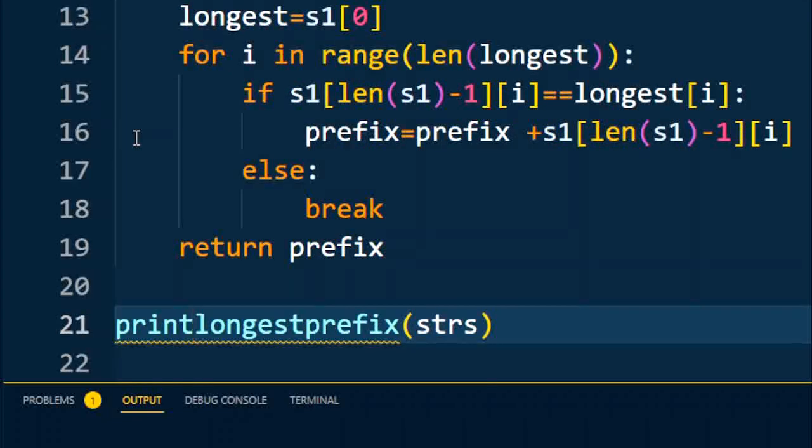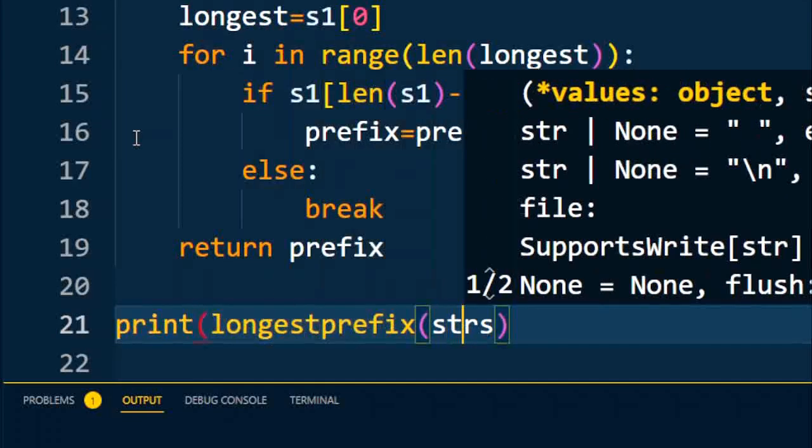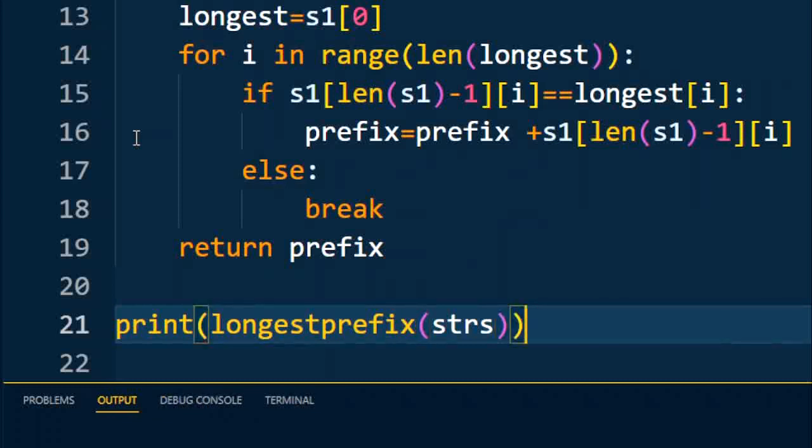After execution of the code, it will return the longest prefix. So I save the code and I'll execute it. I'll get the longest common prefix by using the sorting method. Hope you understand this first approach.